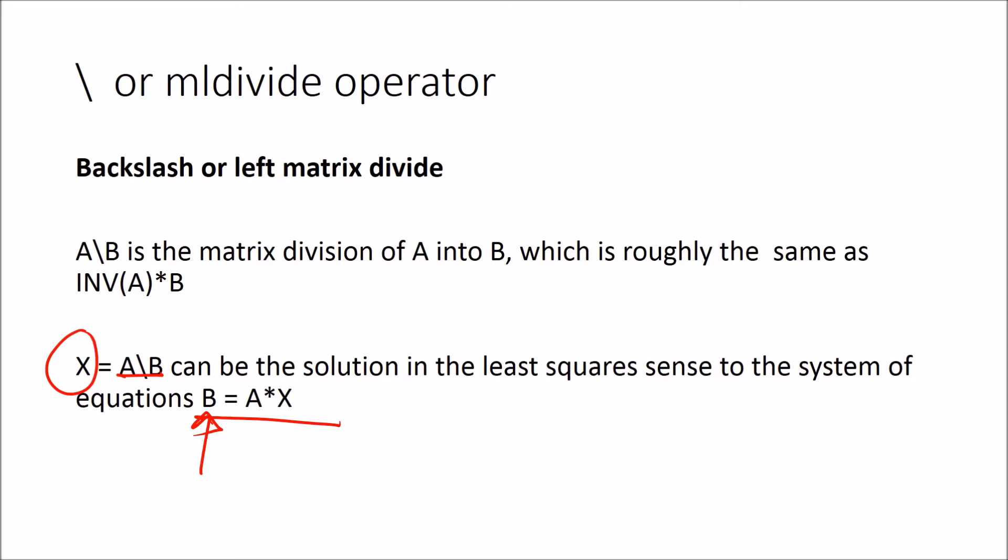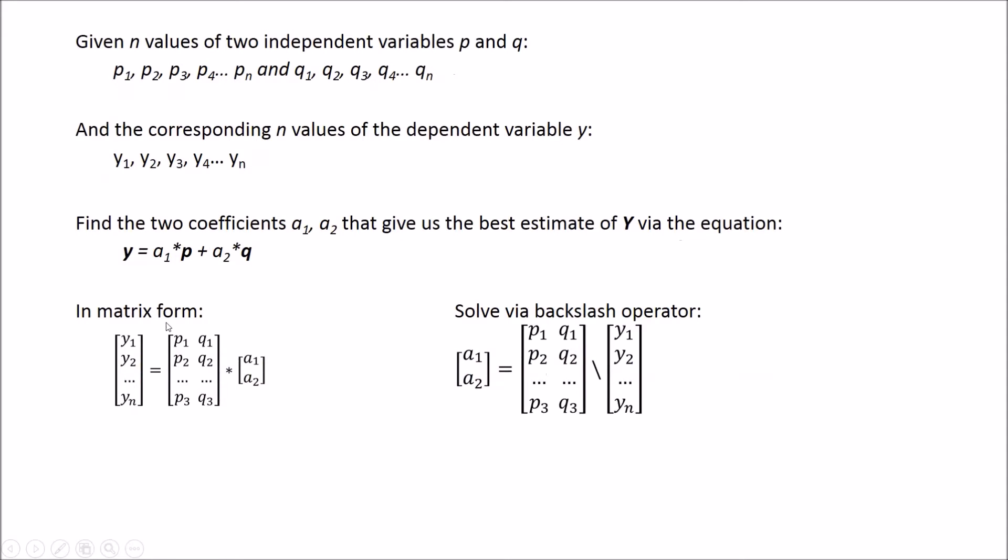Where B would be the thing we want to find, like the time to get to Chicago in our previous data, A is some coefficient, and X is some independent variable or some modification of an independent variable.